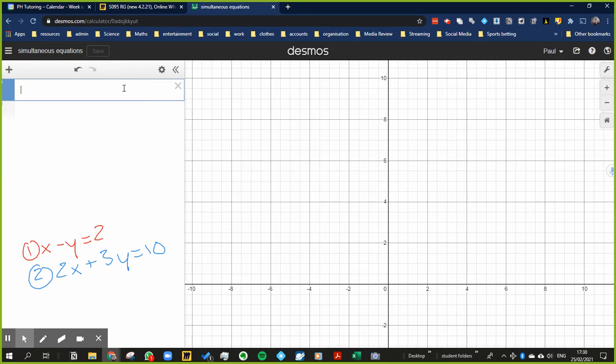Now the great thing about Desmos is you don't have to rearrange the equation to actually have y equals mx plus c, which is kind of cheating really. If I just write x minus y is equal to 2, that's one of my equations, then I press enter.